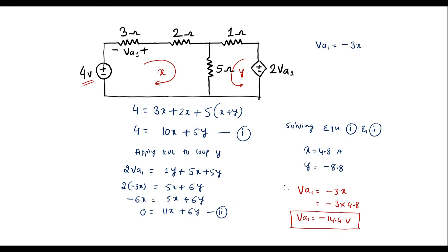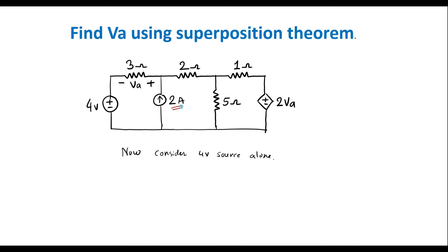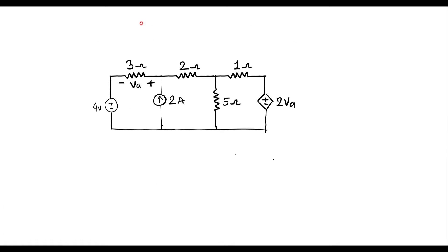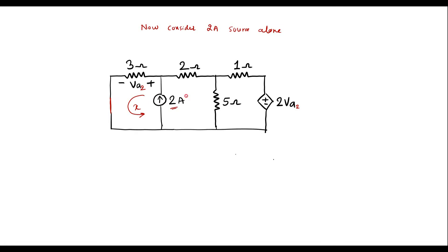Now consider the 2 amp source alone. In that case the 4 volt voltage source must be short circuited. I will assume the voltage across the 3 ohm resistor is VA2. Here we have 3 loops: let current through loop one be X, loop two be Y, and loop three be Z.